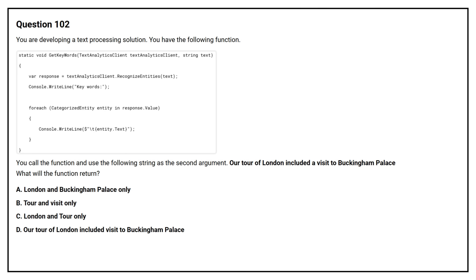Option A: London and Buckingham Palace only. Option B: Tour and visit only. Option C: London and tour only. Option D: Our tour of London included a visit to Buckingham Palace. The correct answer is Option A: London and Buckingham Palace only.